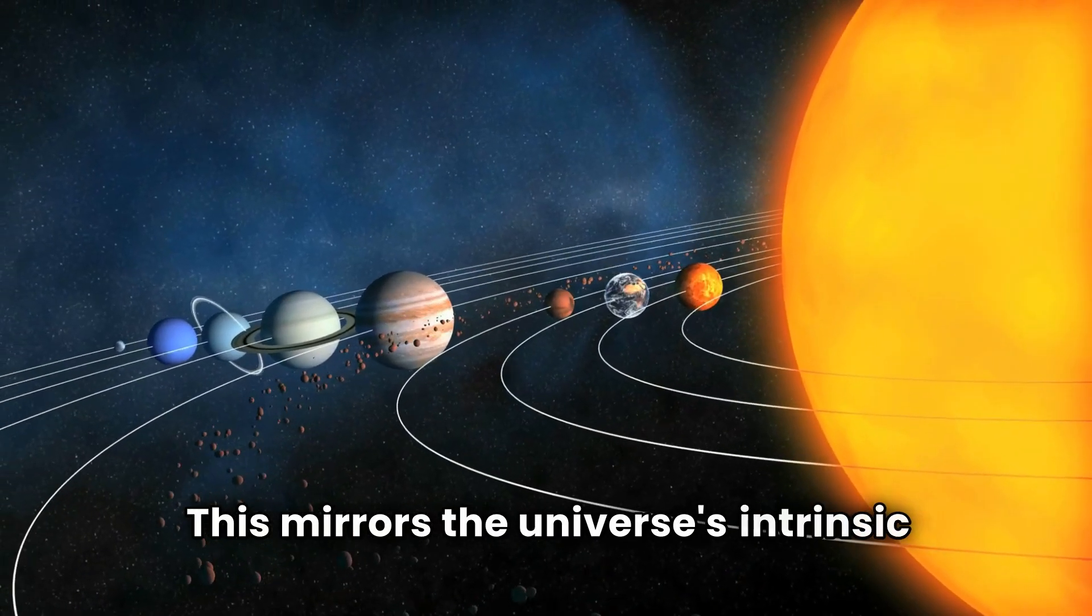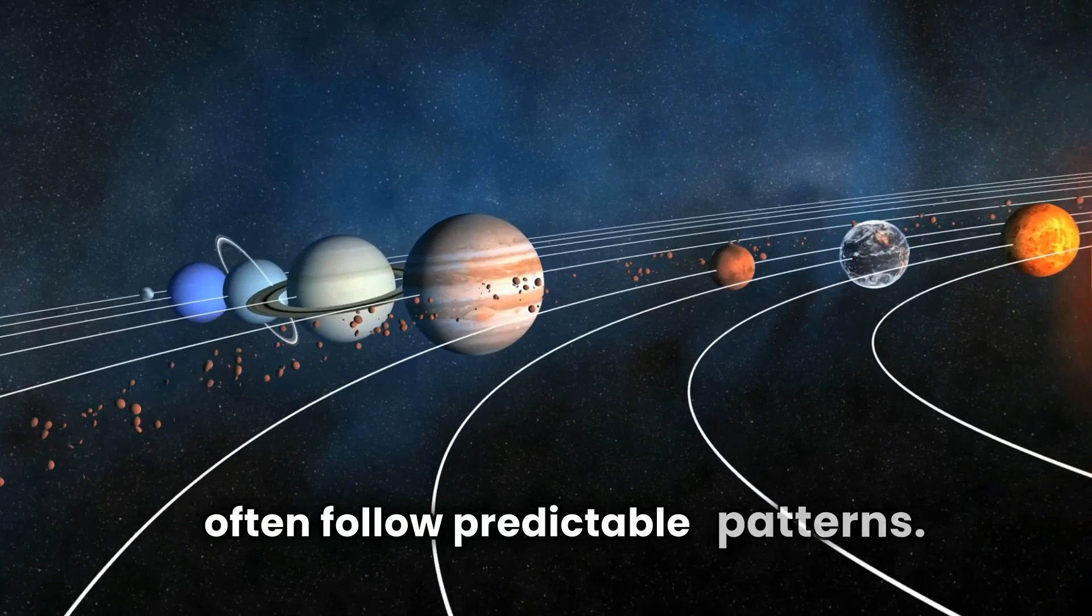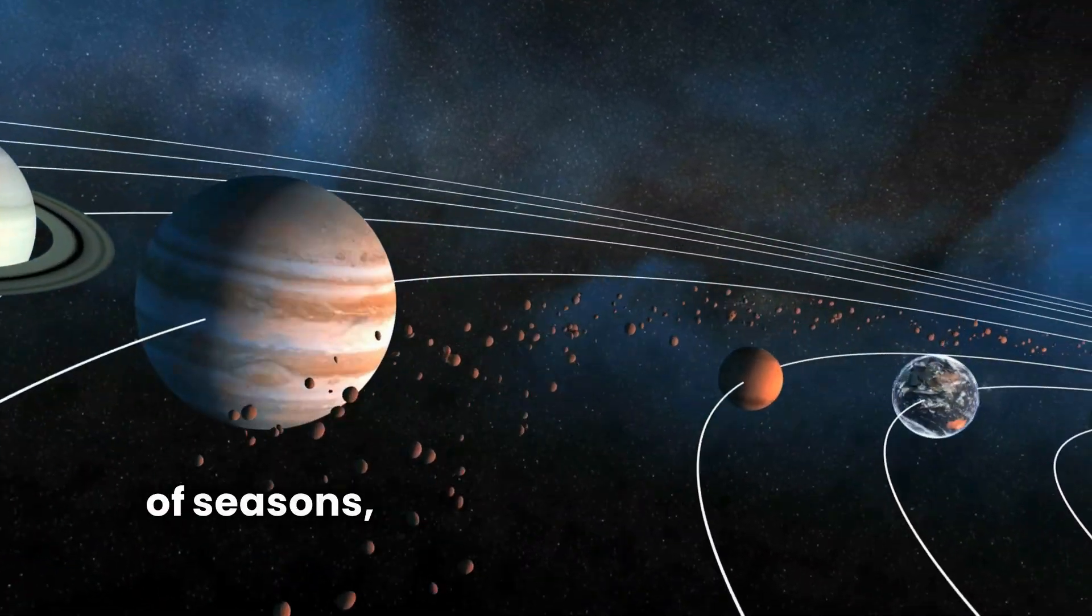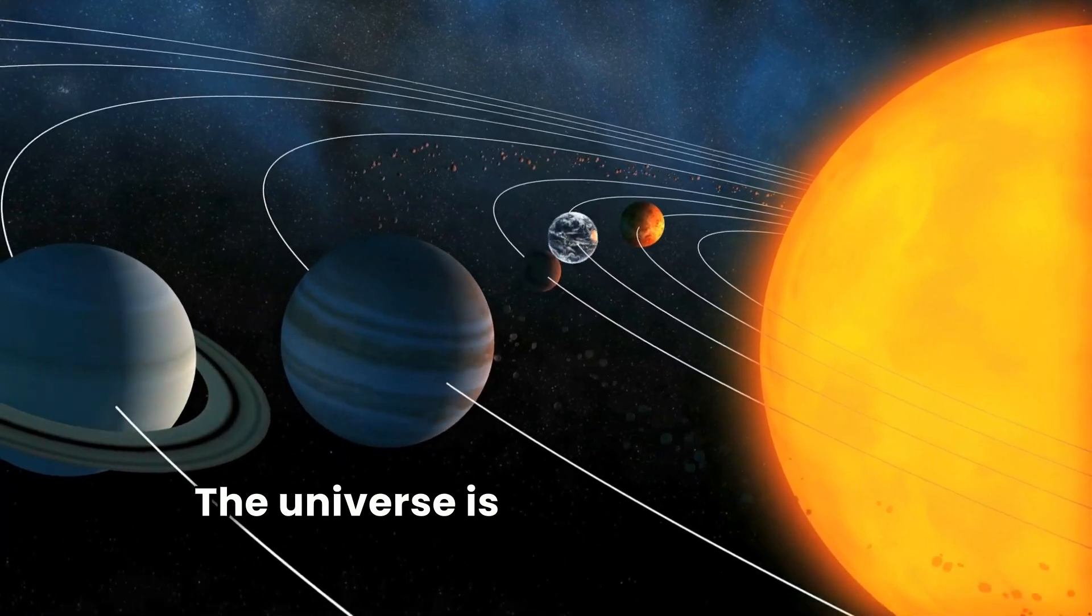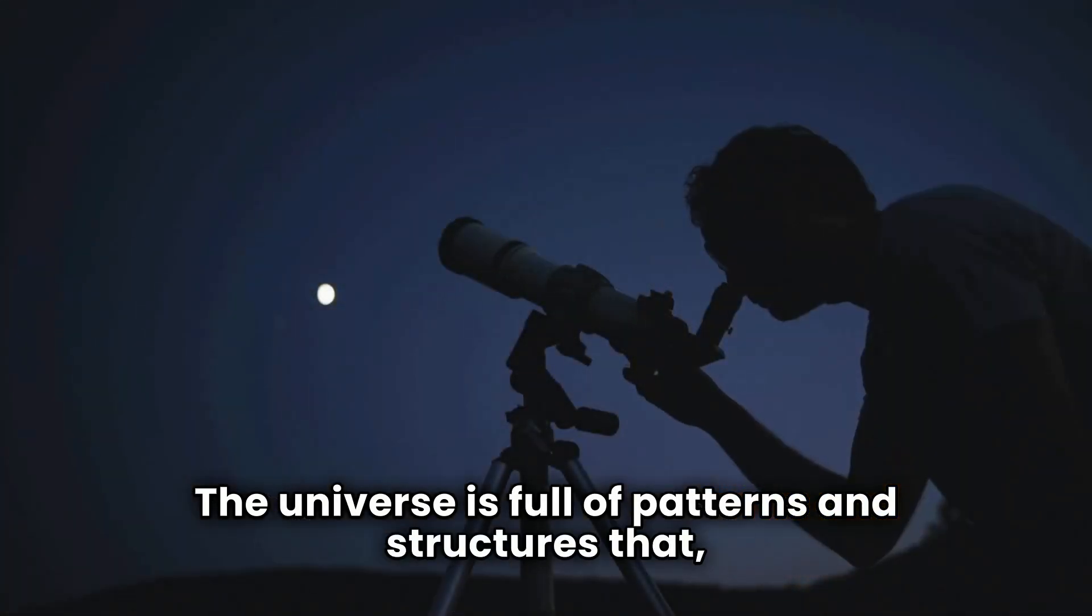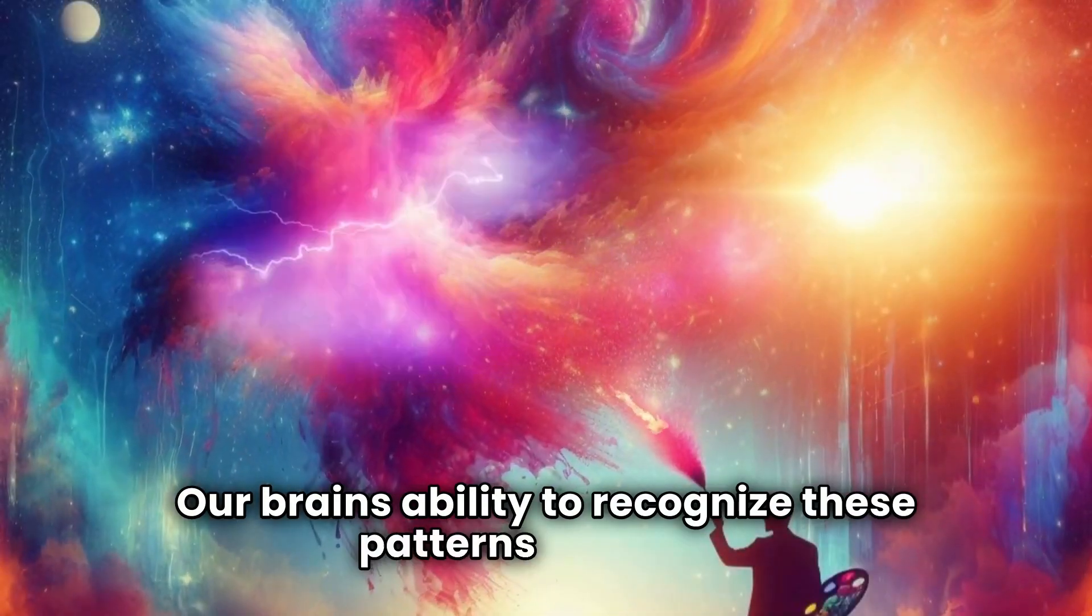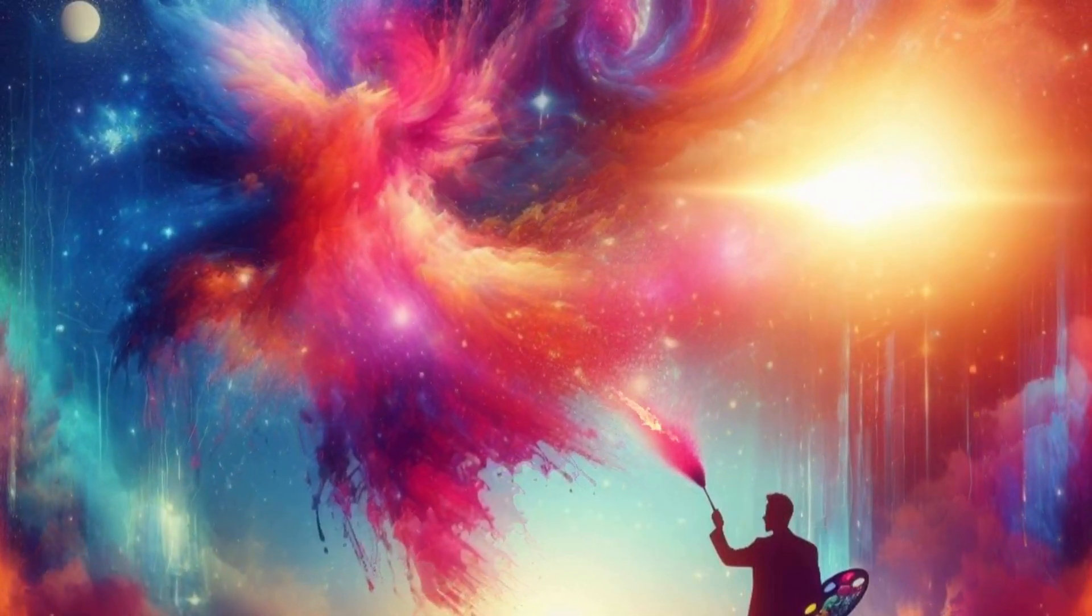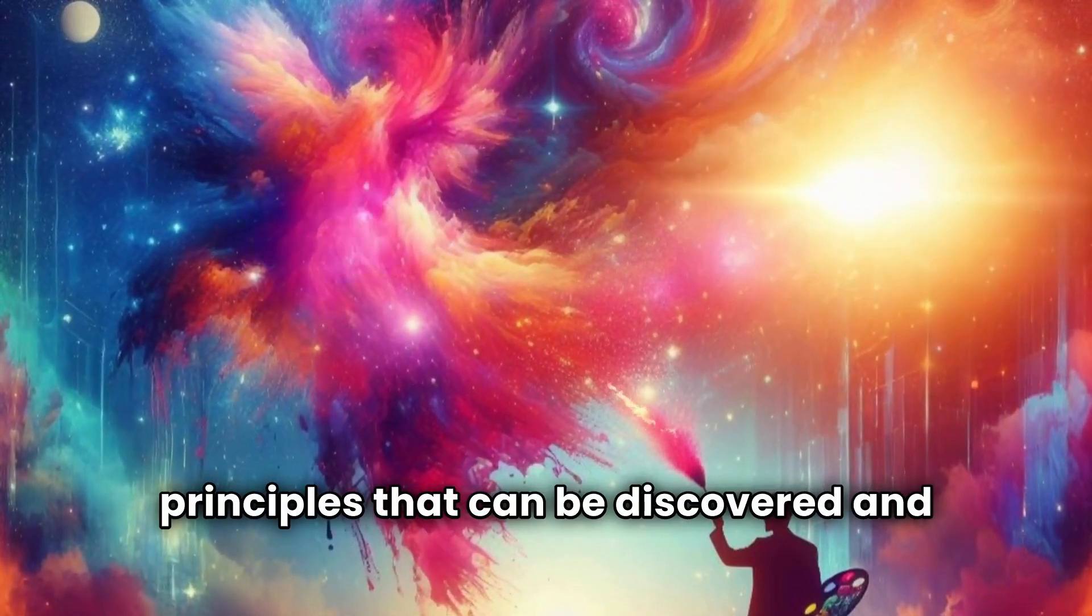This mirrors the universe's intrinsic order, where seemingly random phenomena often follow predictable patterns. Think about the orbits of planets, the cycles of seasons, or the formation of weather systems. The universe is full of patterns and structures that, once understood, can be used to make predictions. Our brain's ability to recognize these patterns suggests a deeper, underlying order in the cosmos. It implies that the universe operates on principles that can be discovered and understood.